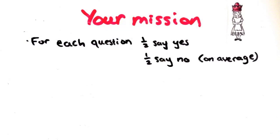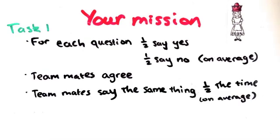On average, for each question asked, half say yes and half no. If teammates are asked the same question, then they must have the same answer. And finally, regardless of what question is asked, the teammates only say the same thing half the time.